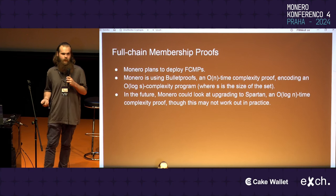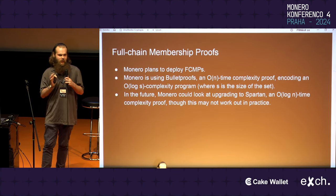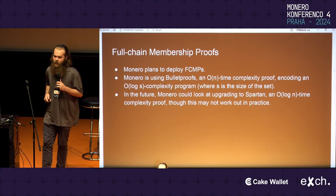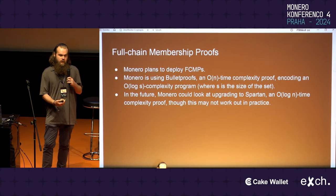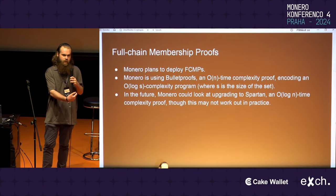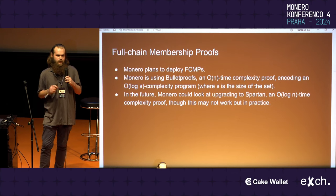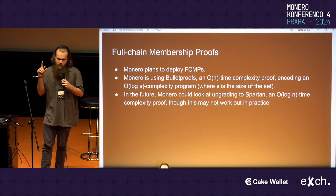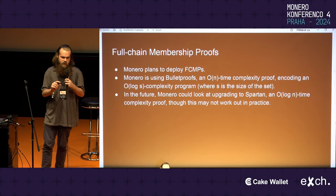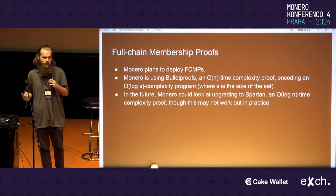Basically, if your program does 100 things, it's going to take 100 units of time to verify, but it's only going to take the space of 10 different things. It's much smaller in size, but the time is equivalent.